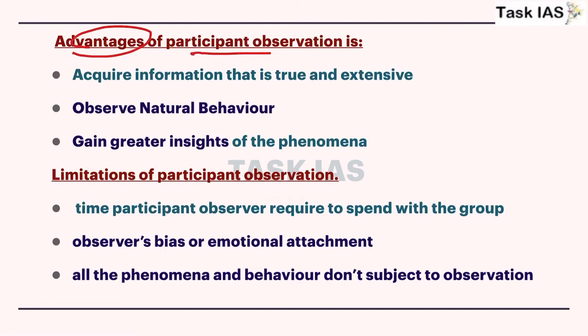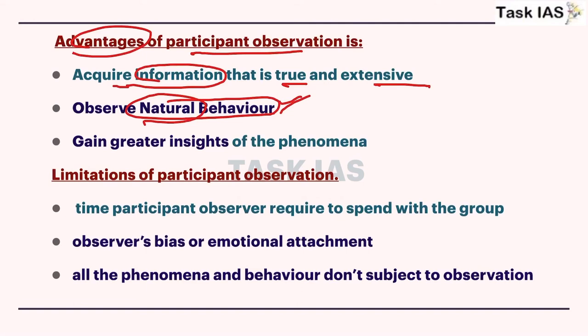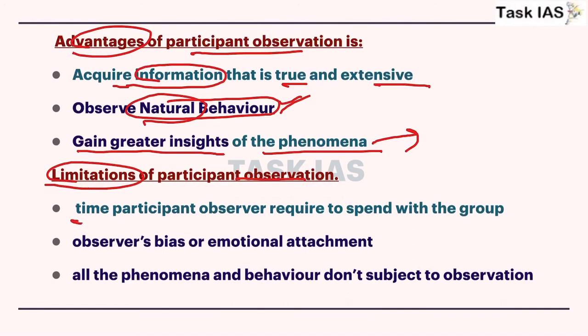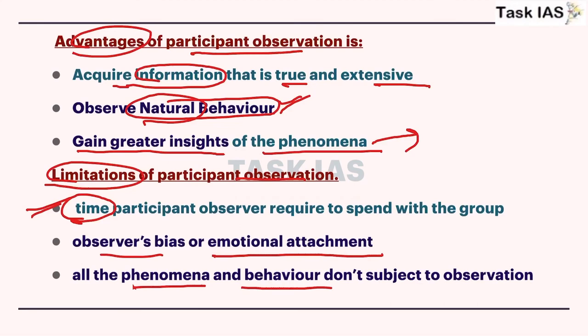Advantages of participant observation include: first, you acquire true and extensive information because you are actually participating in events. Second, you observe natural behavior since the natural environment is not disturbed, giving greater insights into various phenomena that people would not otherwise tell you. Limitations include: first, time is a limiting factor because a researcher has to spend a lot of time initially so people become comfortable. Second, the observer may develop emotional attachment with the community, reducing objectivity.